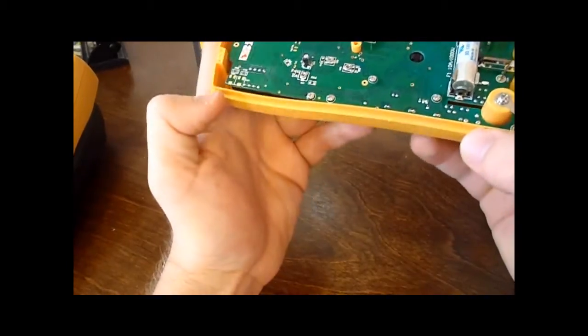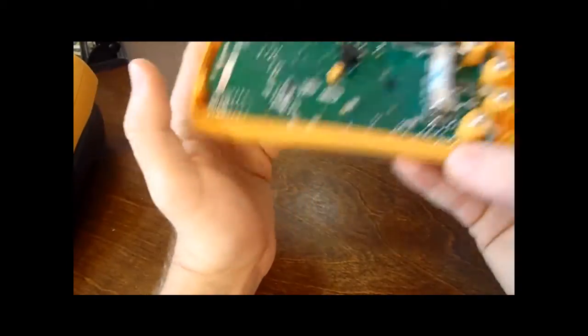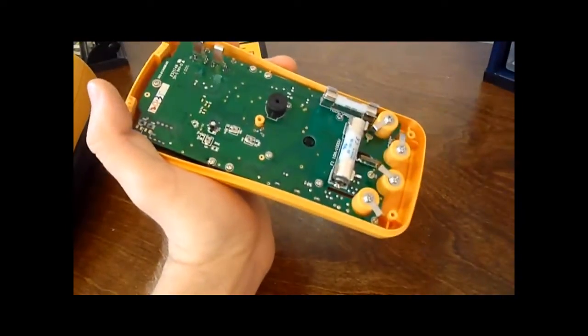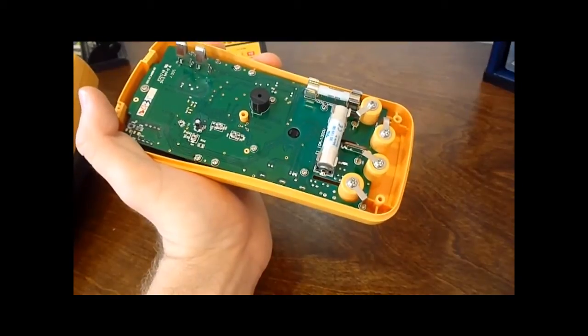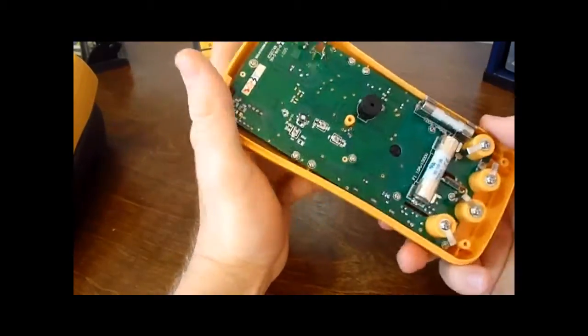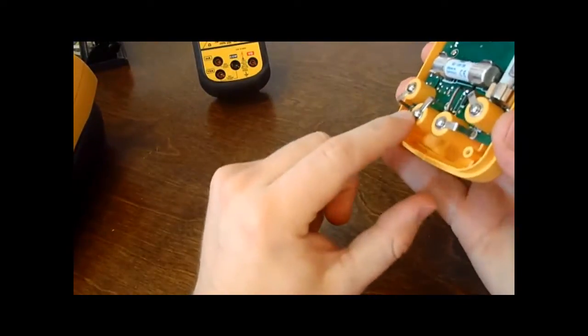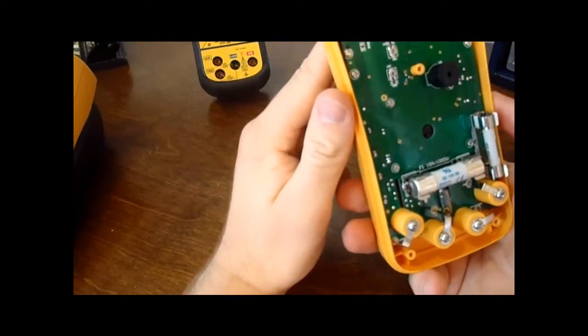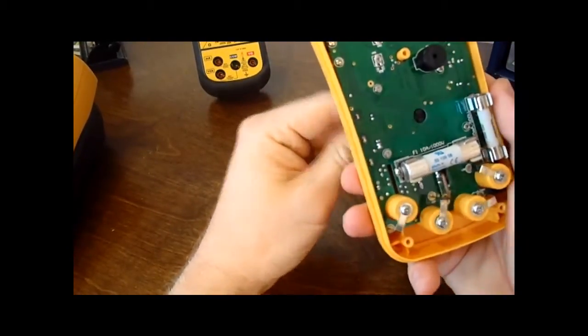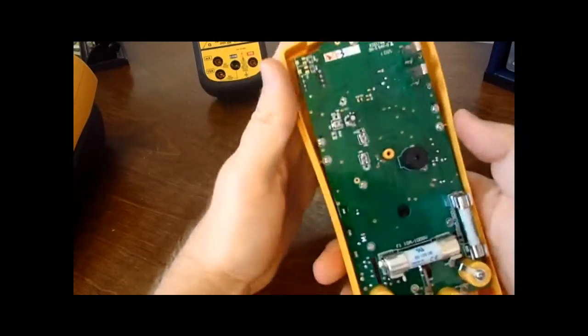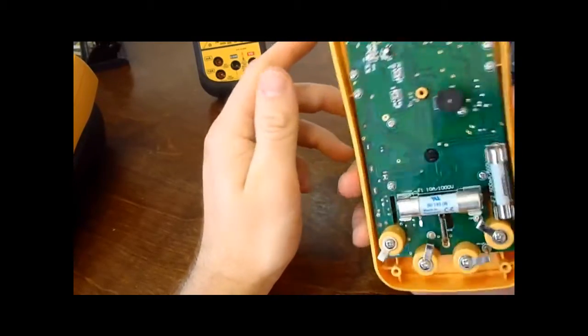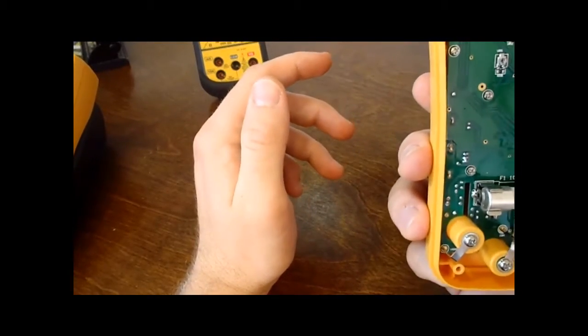Internally, this meter looks pretty solid. It doesn't have any blast shields for if the fuses go. I mean, you can't have it all for this price. But as you can see, the banana jacks are very solid in stature. It's a pretty solid meter when you break it down internally. It's all surface mount, very few through-hole components. It just seems really well built inside.